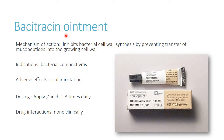Bacitracin is also available and works on cell wall synthesis. It's typically used as a topical medication found in cuts-and-scrapes ointments, and we can use it in the eye as well. This one also comes as an ointment, so it's administered in inches rather than drops.